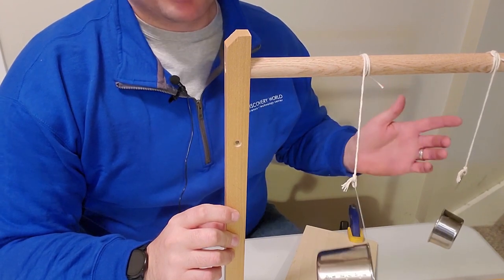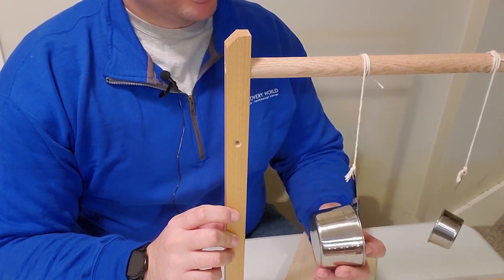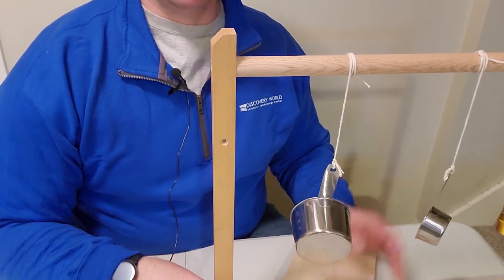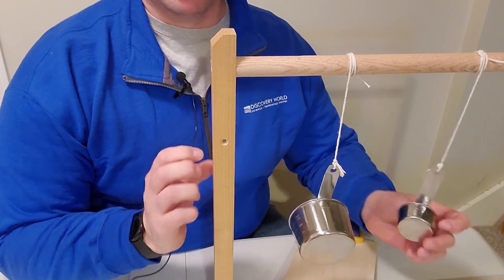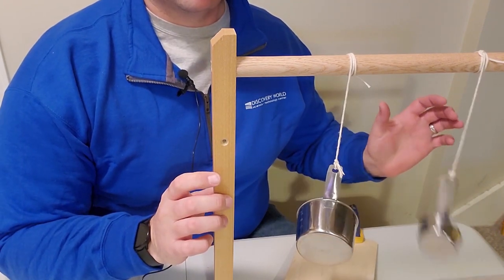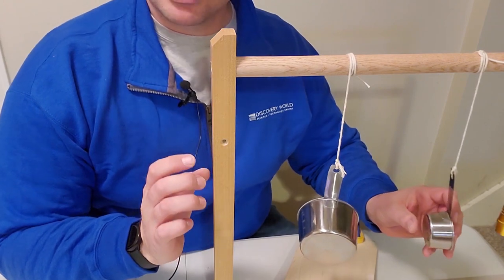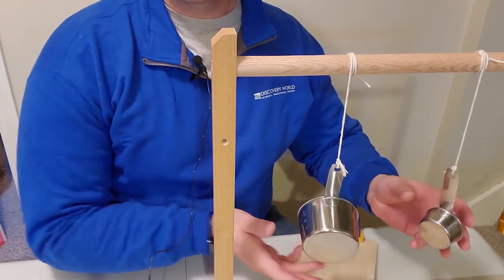Now, on its own, that might not be very exciting. But what you can do as an investigation is compare it to a couple things. Here's another measuring cup, but this one's much smaller. It also can swing back and forth, back and forth. But does it swing at the same speed? Well, let's find out.